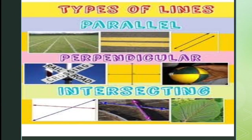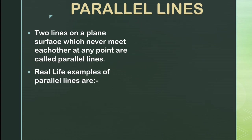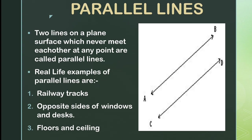Now let's learn about the types of lines. Parallel lines: two lines on a plane surface which never meet each other at any point are called parallel lines. Real life examples of parallel lines are railway tracks, opposite sides of a window or desk, and floors and ceilings. Kids, have you ever seen these lines meeting each other at any point? No. So these are the perfect examples of real life parallel lines. As you can see in the adjoining figure, AB and CD are two parallel lines.